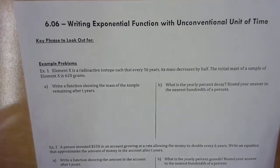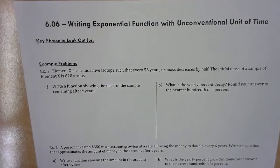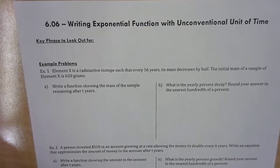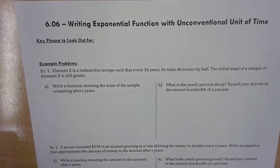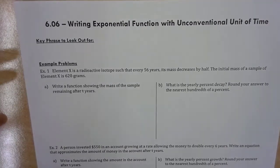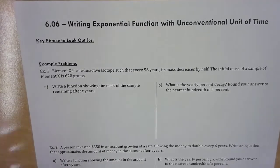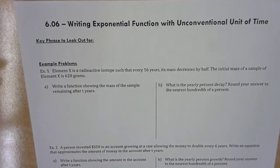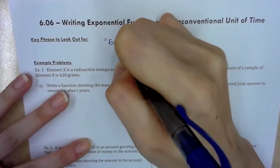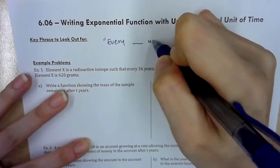So today we're going to talk about, what if instead of going from yearly to monthly, or yearly to daily, or yearly to per decades, what if I told you something is increasing by 12% every two years? That's kind of random. It's not really a unit of time per se, but still every two years.